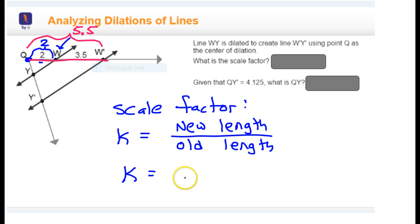So, if I want to find the scale factor, it's going to be the new distance divided by the old distance. The new distance is 5.5, the old distance was 2, so the scale factor is this.